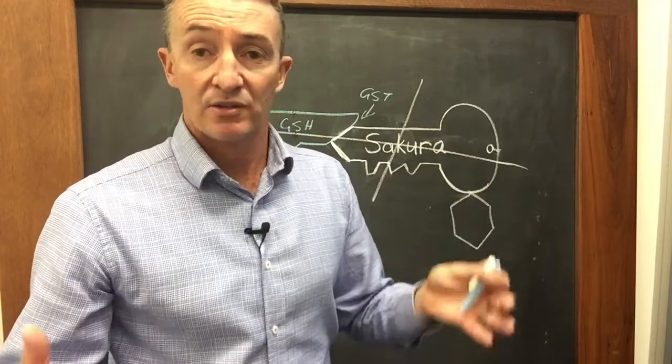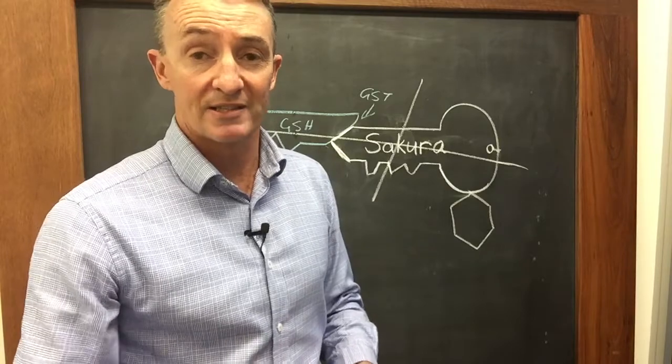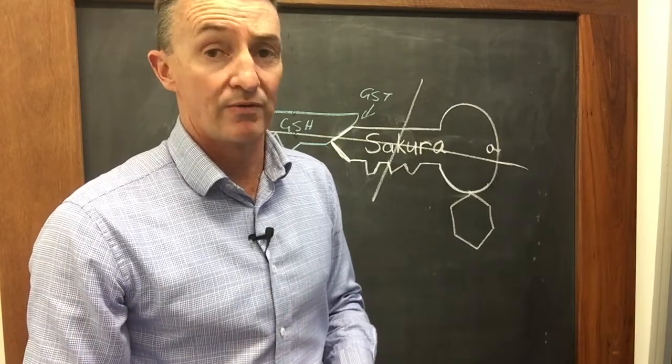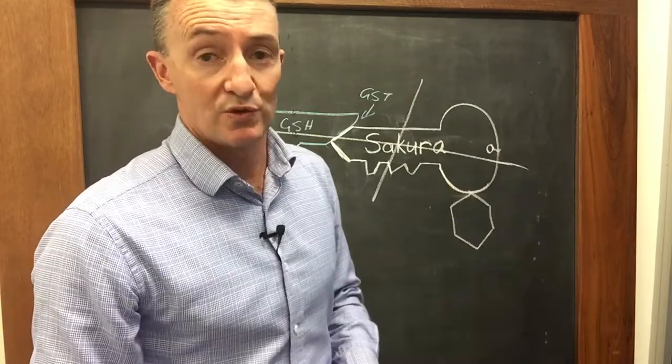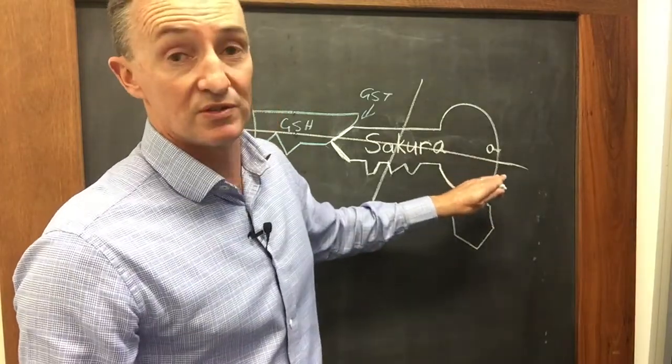So the plant has used the GST to break the herbicide down before it could get to the target site. And that is how Sakura resistance in ryegrass, in terms of the one that Roberto evolved in the lab those years ago, that is the mechanism it was using to cause resistance to Sakura.